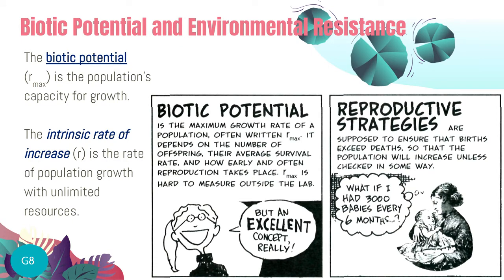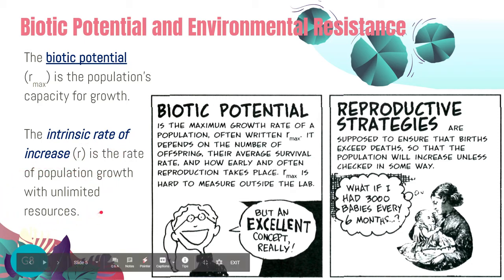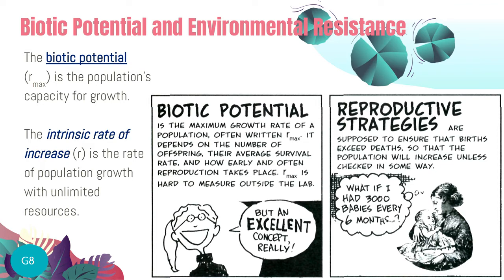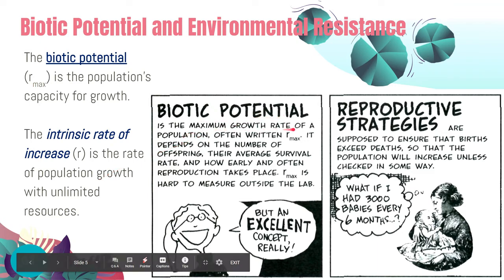Biotic potential and environmental resistance are two major forces that help maintain balance in an ecosystem. We define biotic potential as the population's capacity for growth, usually represented by R max, wherein R refers to the intrinsic rate of increase — the rate of population growth with unlimited resources. Assuming unlimited food, water, enough space, and conducive temperature — everything an organism or community would need — how fast will they reproduce? That's biotic potential, the maximum growth rate.